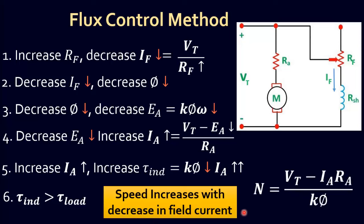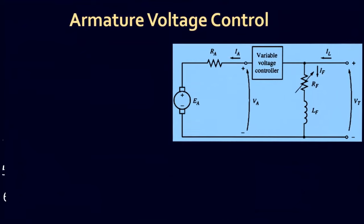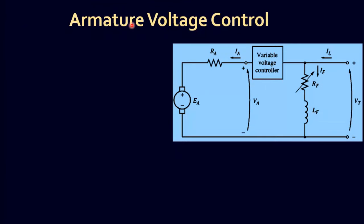This can also be verified by the speed and flux relation, which states that speed is inversely proportional to field flux. As flux is decreased, the speed of the motor is increased. The second and most commonly used method of speed control is called armature voltage control.